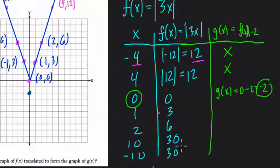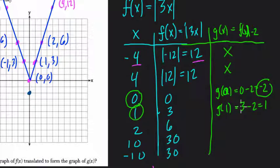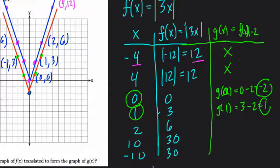G(1) equals F(1) — which is three — minus two, which is one. So the point is one comma one. Notice it's two below the corresponding point on F(x). If we keep doing that, we get all the points two below the original. Now we can graph this function — I'll use red. This function will be parallel to our absolute value function on both sides, but two points lower.